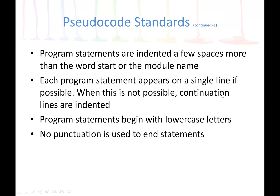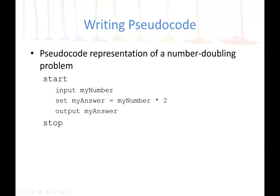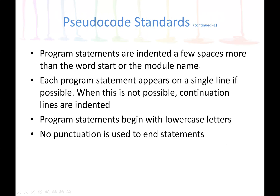Program statements are indented, as we can see in the example. The statements — input, set, and output — are indented with a field space more than the words 'start' or 'stop', and also the module name. Each program statement appears on a single line if possible. When this is not possible, continuation lines are indented. Program statements begin with lowercase letters, and there are no punctuations used to end the statement.